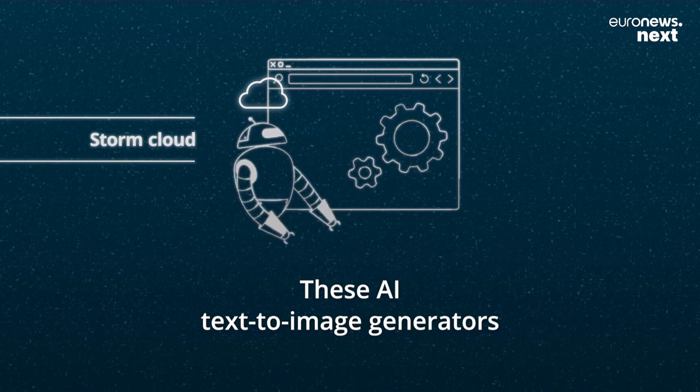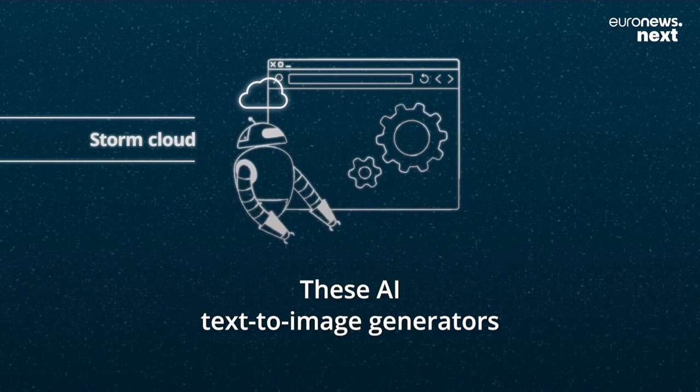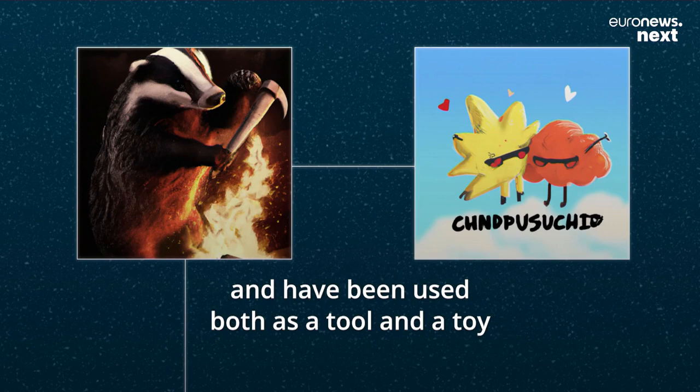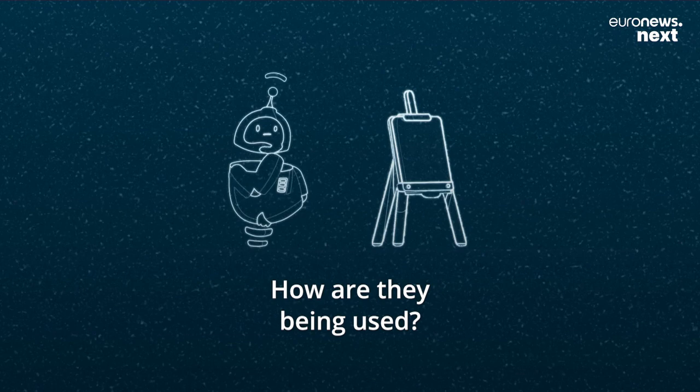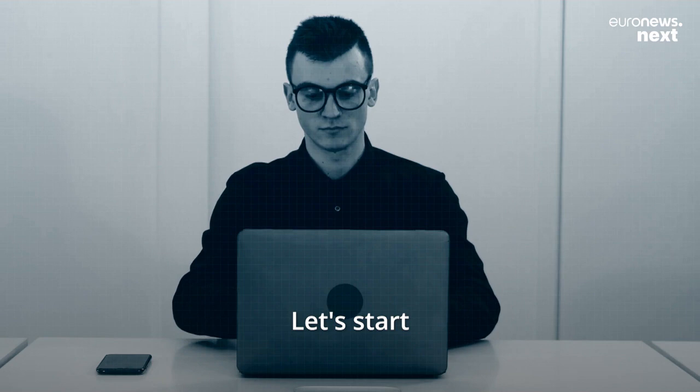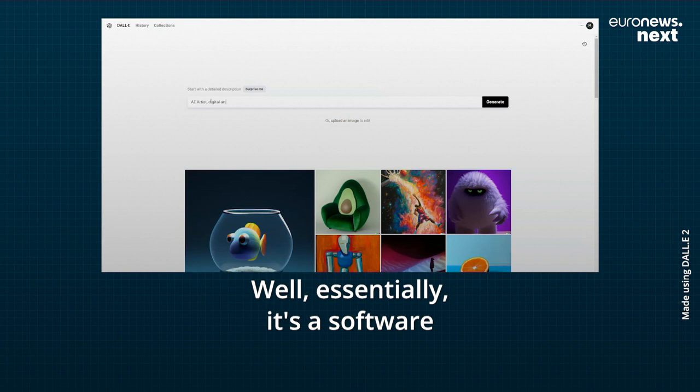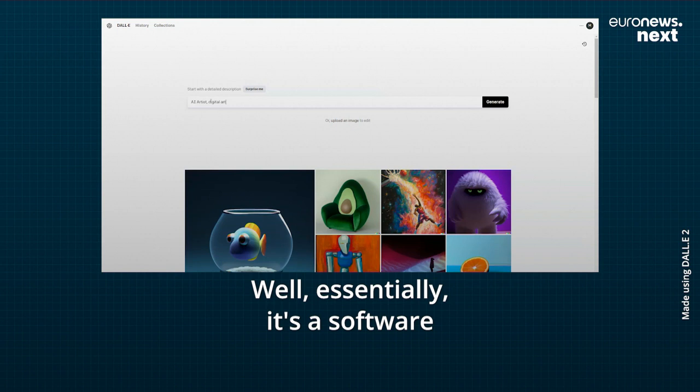These AI text-to-image generators have taken the internet by storm and have been used both as a tool and a toy by professional and amateur artists alike. But how do they work? How are they being used? And how do today's artists feel about this powerful new technology? Let's start with what an AI text-to-image generator actually is — essentially, it's a software that creates an image from a text input or prompt.